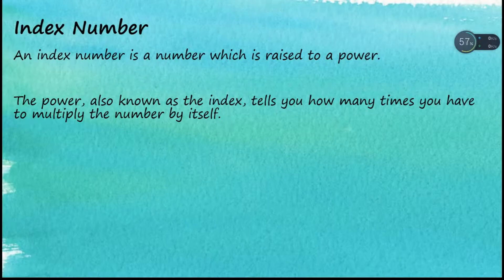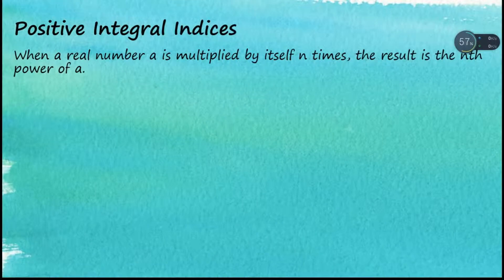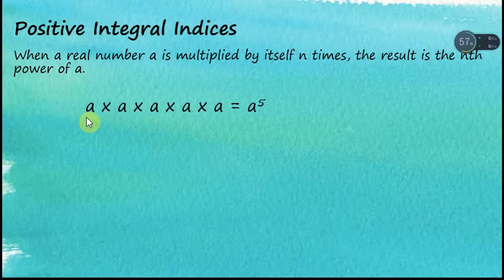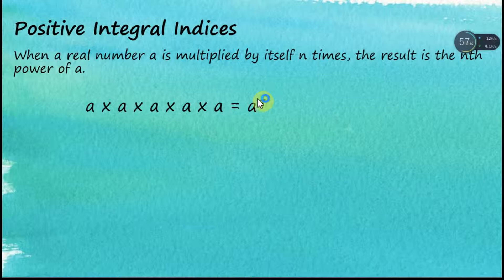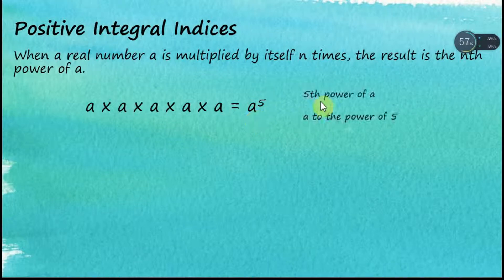Let's go to the next slide. Positive integral indexes: when the real number a is multiplied by itself n times, the result is the nth power of a. For example, we have the number a multiplied by itself five times — a times a times a times a times a — and we write this as a with superscript five, calling it 'a to the power of five' or 'the fifth power of a'.